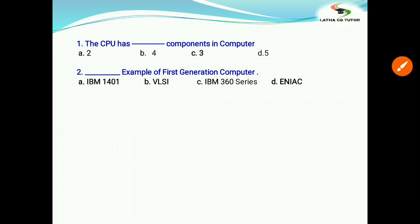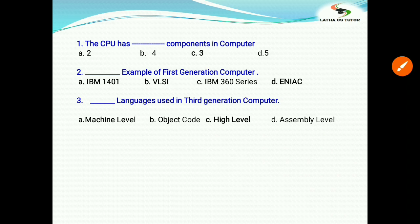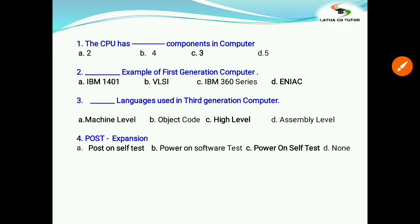Options: a) IBM 1401, b) VLSI, c) IBM 360 series, and d) ENIAC. The correct answer is ENIAC. Third question: Languages used in third generation computers? Options: a) machine level, b) object code, c) high level, d) assembly level. The correct answer is high level languages. In third generation computers we started to use languages like BASIC, C, C++, etc. Fourth question: POST expansion. Options: post on self test, power on software test, and power on self test. It is power on self test, option C.